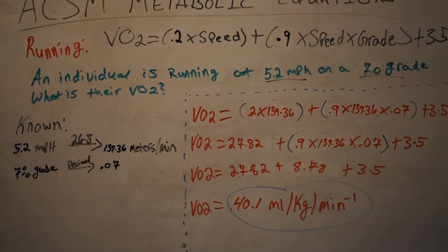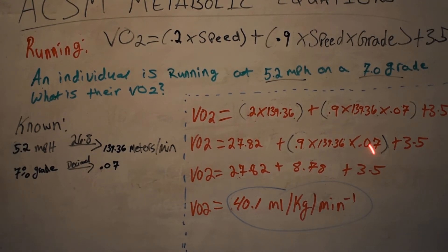So all I've done in step number one is I've just rewritten the equation so I can get reorganized and get my thoughts together. So what I like to do now is I like to just do the very first part of the equation. So all I'm going to do is multiply 139.36 times 0.2, and after I've done that, don't do anything else—just rewrite the equation again.